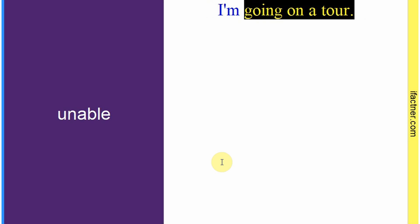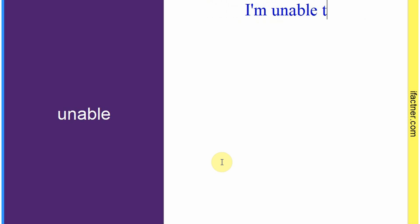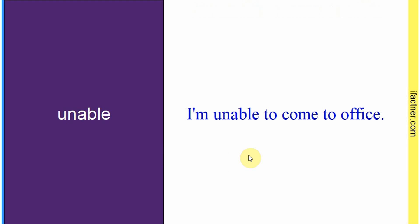Word hai: 'unable'. Sentence banaate hain meaning samajhne ke liye: 'I am unable to come to office.' Mein aaj office nahin aa sakta. 'Unable' ka matlab hota hai 'nahin kar sakta', 'nahin ho sakta'. 'Able' ka opposite hai 'unable'. 'Able' ka matlab hota hai karna, kar sakte ho. Sentence banaaya: 'I am unable to come to office.'